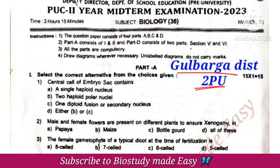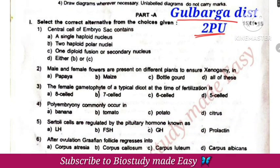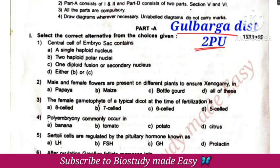The question paper will be noted. After 2 marks, 3 marks, and 5 marks, questions will be repeated. Now, the central cell of the embryo sac has 2 haploid polar nuclei.